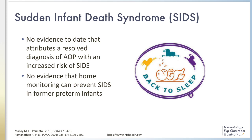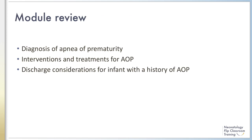Home cardiorespiratory monitoring after discharge from the NICU may be prescribed for some preterm infants with a prolonged course of recurrent and extreme apnea, which is relatively uncommon. In this module, we discussed the diagnosis of apnea of prematurity and reviewed proposed interventions and treatments for apnea of prematurity. We concluded with a consideration of discharge criteria for infants with a history of apnea of prematurity. This concludes Module 3.